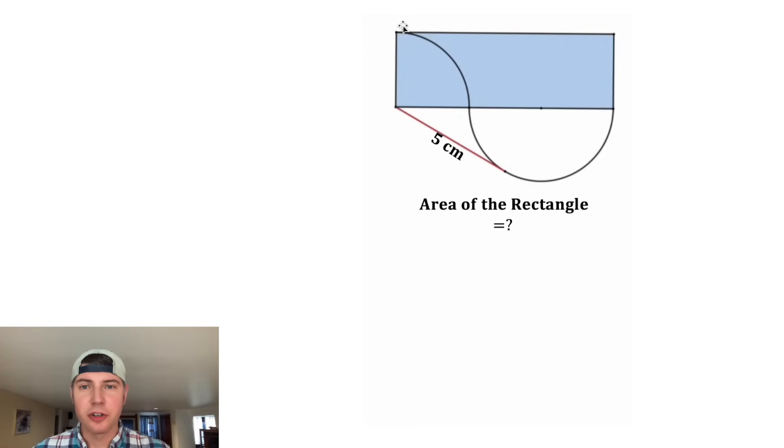So the problem gives us a semicircle right here and a quarter circle right here, and then this red line with the length of 5 that goes from the vertex of this rectangle tangent to the semicircle. If you want to try this on your own, pause it right now because I'm going to solve it in three, two, one.